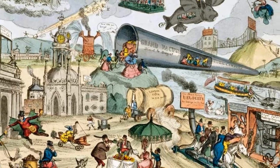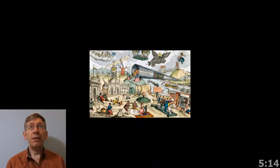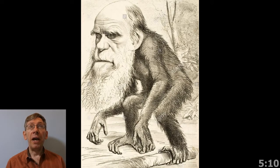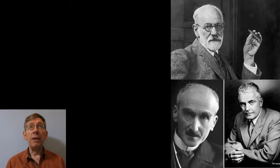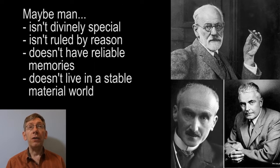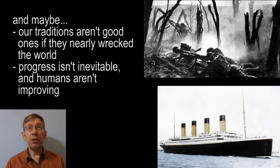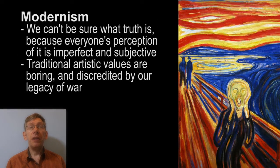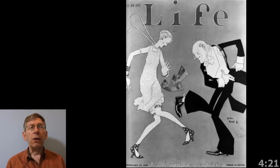By the beginning of the 20th century, many artists and thinkers are not so optimistic about man, and not so sure that we can get to the truth. Darwin argues that man might not be divinely special. Freud argues that man isn't always ruled by reason, but is affected by our subconscious desires. Henri Bergson argues that our memories aren't reliable and can be altered by subsequent experiences. Werner Heisenberg argues that even physical matter isn't necessarily stable. Modern war suggests that maybe our traditional values aren't good ones. These are influences which give birth to Modernism, an artistic mode in philosophy which argues that we can't be sure what truth is because our experience of reality is subjective and individual, and that traditional modes of art are not only boring but discredited by history.